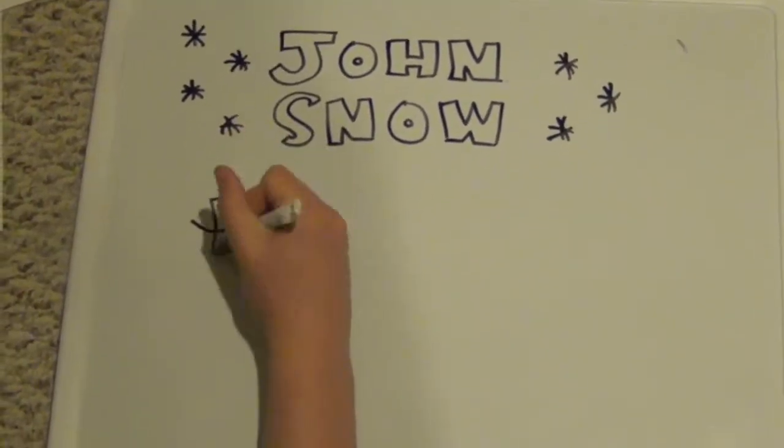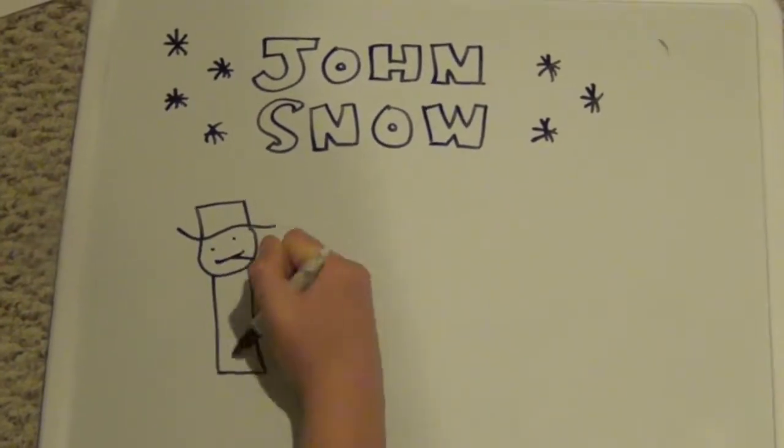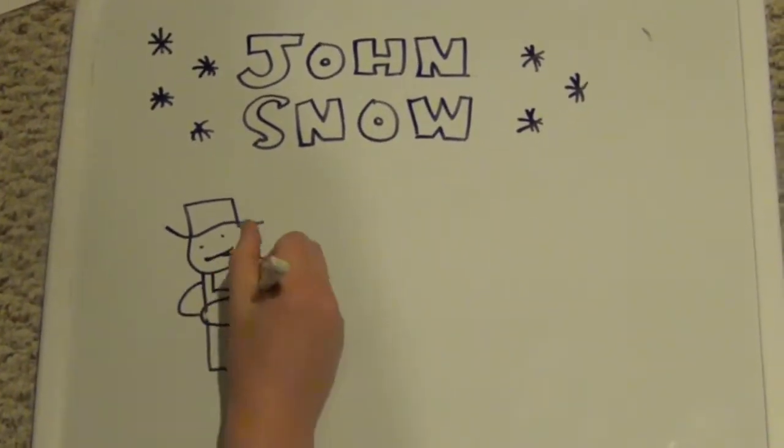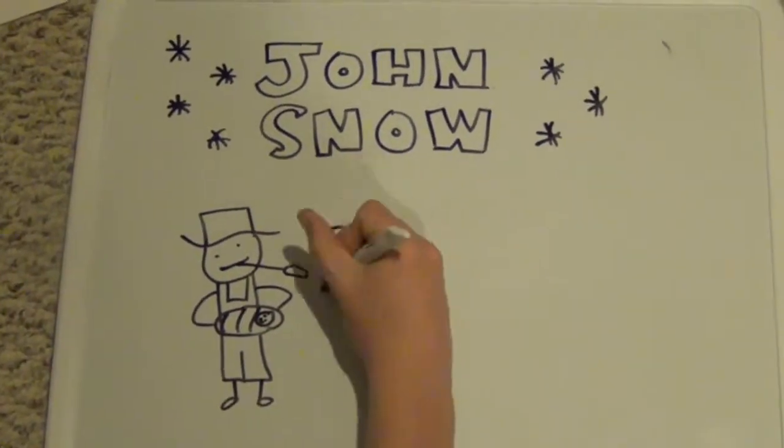My name is John Snow. I was born in the winter of 1813 on March 15. I was the eldest son of a farmer.